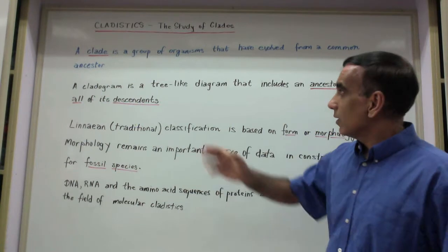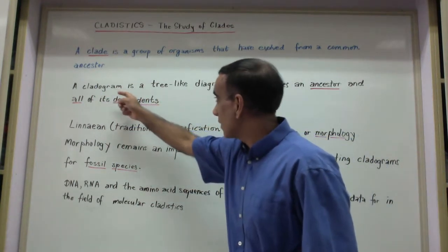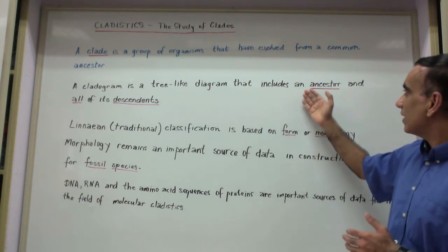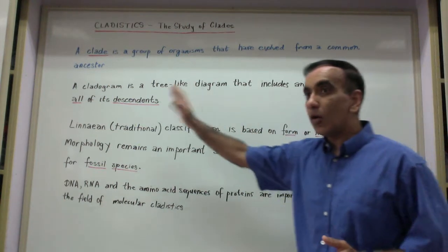To study clades we use cladograms. A cladogram is a tree-like diagram that includes an ancestor and all of its descendants.